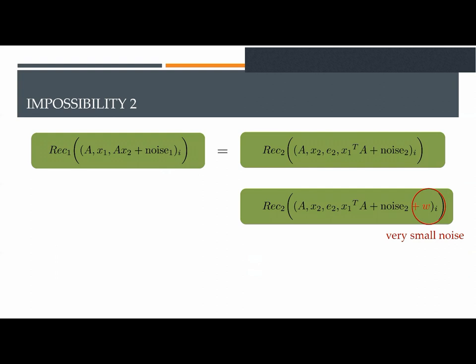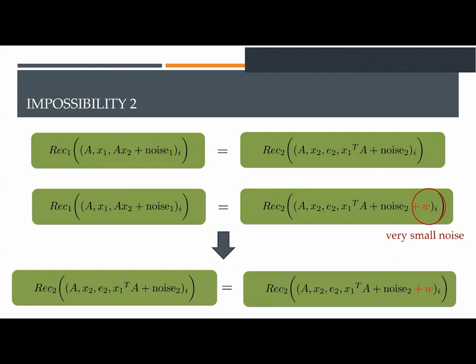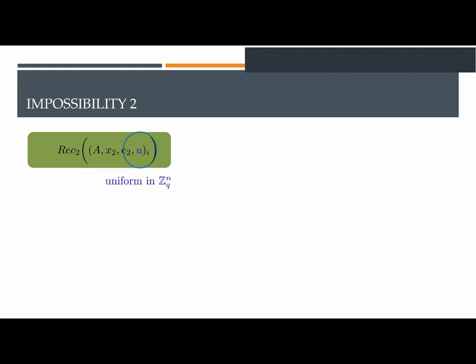Then, we assume that we slightly change the message received by Bob by adding a very small but noticeable noise, w. Since Alice's reconciliation function is noise-ignorant, it must be the case that this small noise did not change Alice's output. Combining these two equations, we get that Bob's output should not change by adding this small noise.